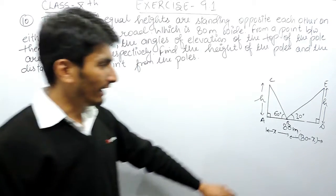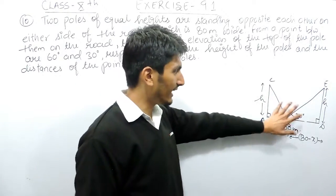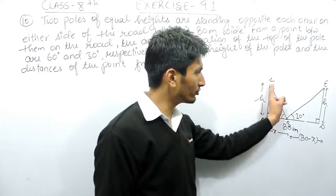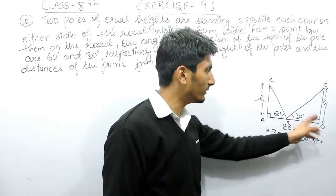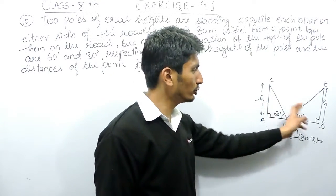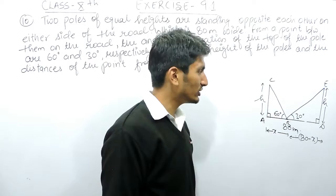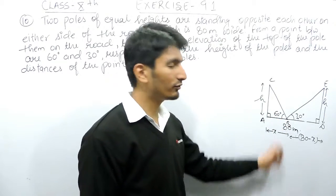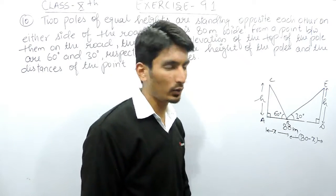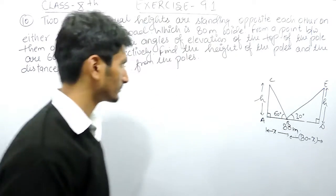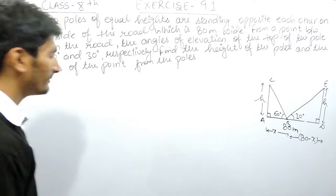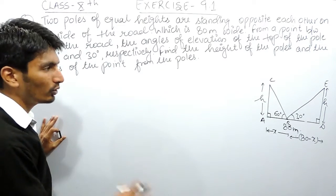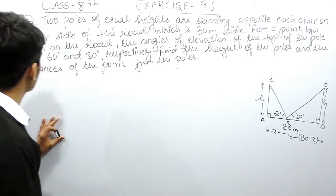The figure is important. Two triangles are formed and you have to use the tan θ ratio in both triangles and then solve those two equations. This is the basic approach that will remain the same throughout the chapter.